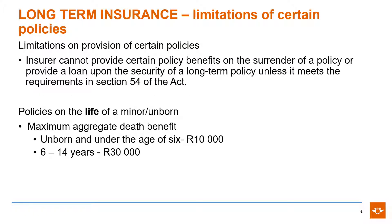According to Section 54 of the Long-Term Insurance Act, there are certain limitations imposed on long-term policies. For example, policies on the life of a minor or unborn child carry a maximum aggregate death benefit of 10,000 rand for an unborn child or a child under age 6, and a maximum limit of 30,000 rand for a child aged 6 to 14 years.